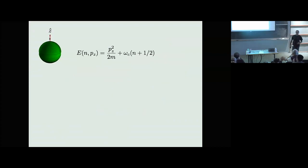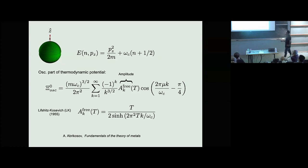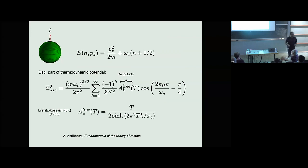Let me remind you how Lifshitz-Kosevich, which is primarily the way we understand oscillations, works. Say you have a free Fermi gas in a magnetic field in three dimensions, with the field along Z. The energy as a function of Landau level index N and momentum P_Z is given by the standard expression. If you sum over Landau levels via the Poisson summation formula and do the integrals over momenta via the saddle point to pick up the contribution from the extremal orbits, you get the oscillatory part of the thermodynamic potential — the so-called Lifshitz-Kosevich expression for the amplitude.